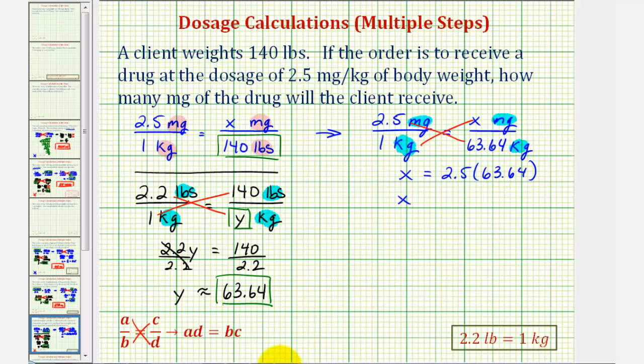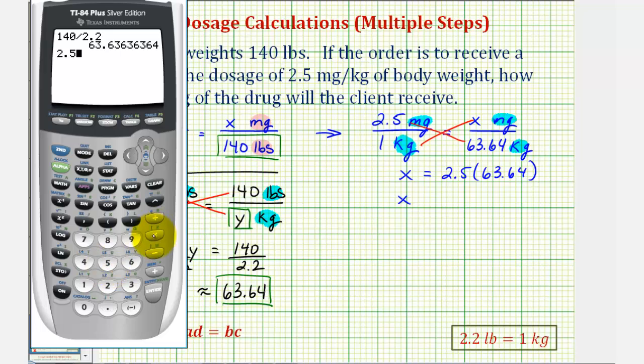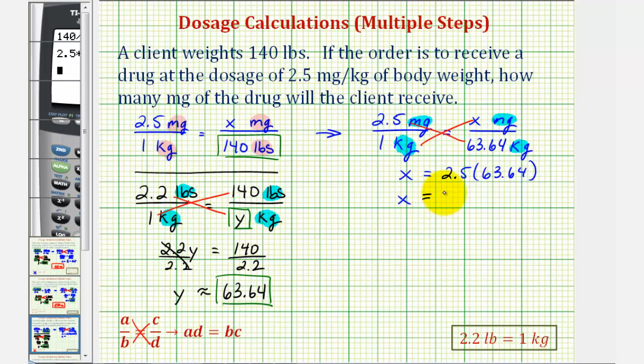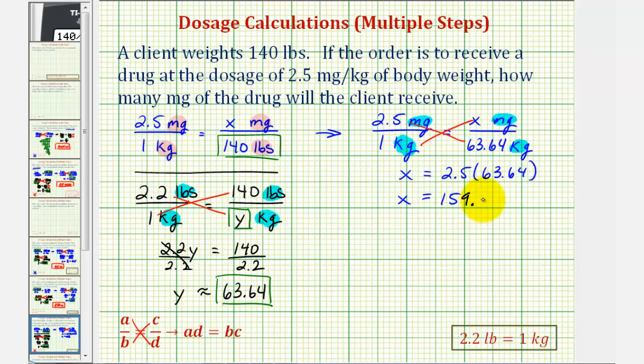Let's go back to the calculator. 159.1. Remember this tells us the number of milligrams for the patient or client that weighs 140 pounds. So the client will receive 159.1 milligrams of medication. I hope you found this helpful.